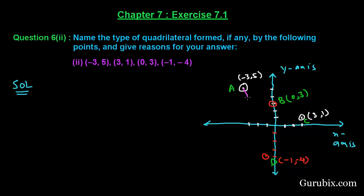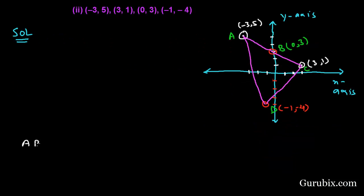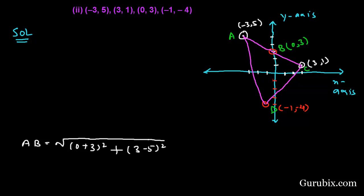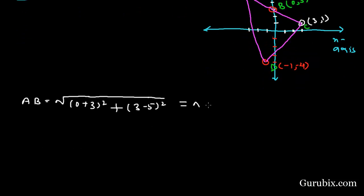Now we shall start finding the distance between AB, BC, CD, and DA. For AB, we use the distance formula: AB = √((0 - (-3))² + (3 - 5)²) = √(3² + (-2)²) = √(9 + 4) = √13.